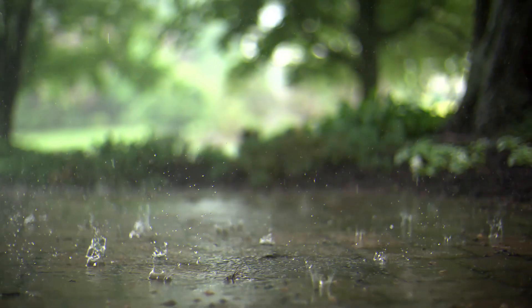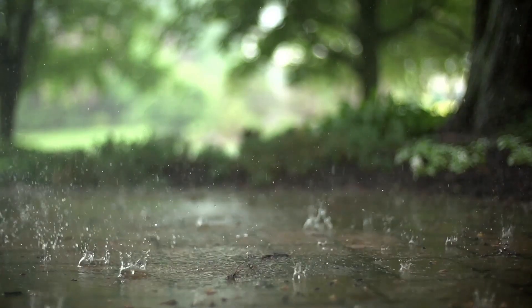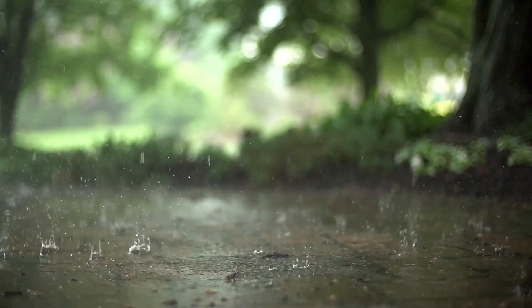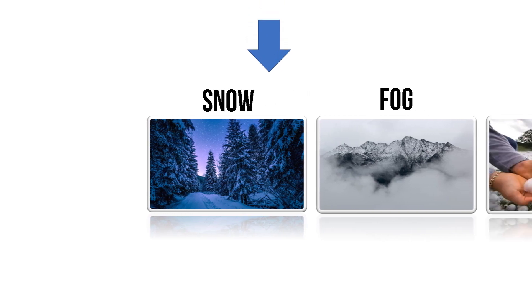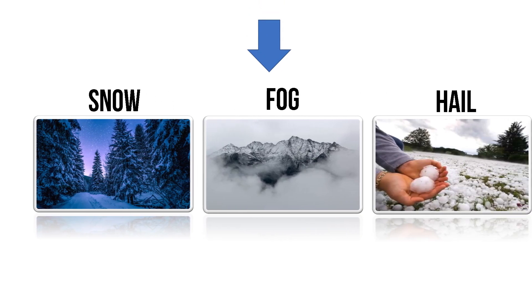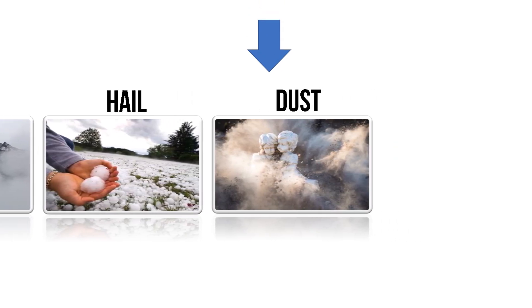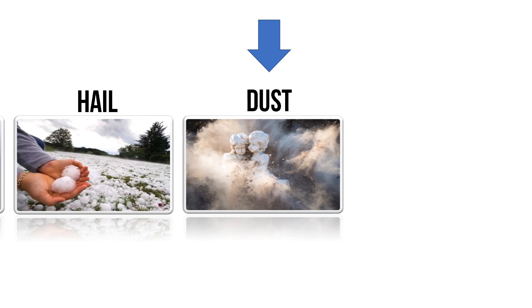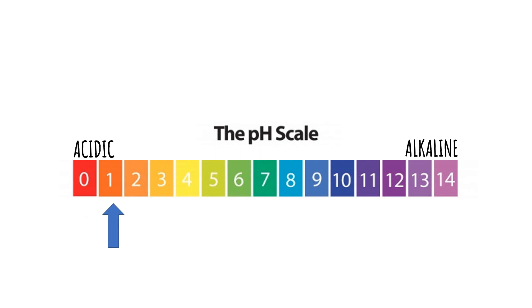What is acid rain? Acid rain is any form of precipitation with acidic components falling to the ground from the atmosphere in wet or dry forms. It can occur in the forms of snow, fog, hail, and dust that settle to earth.